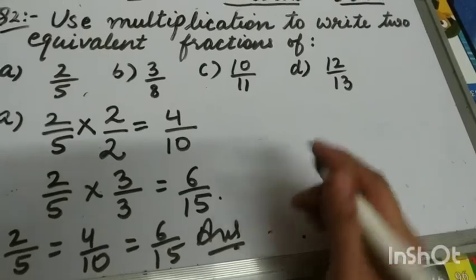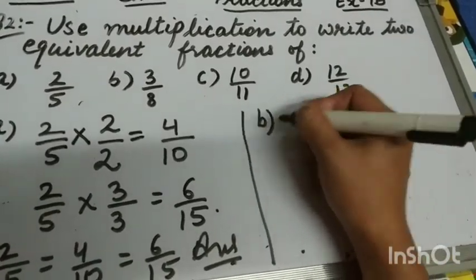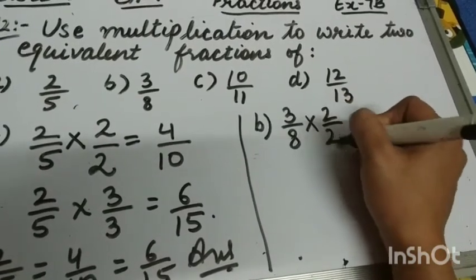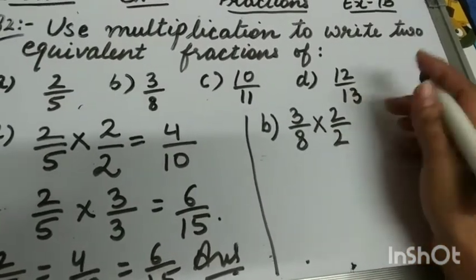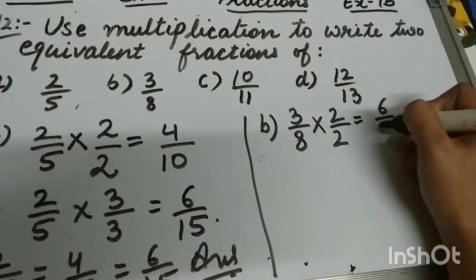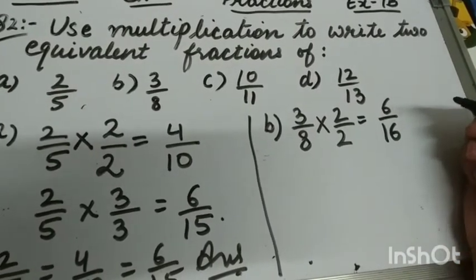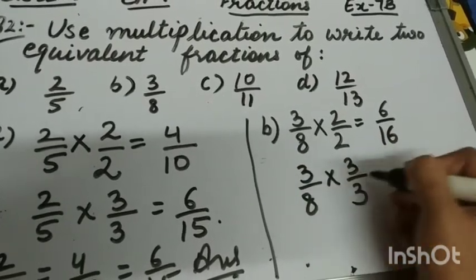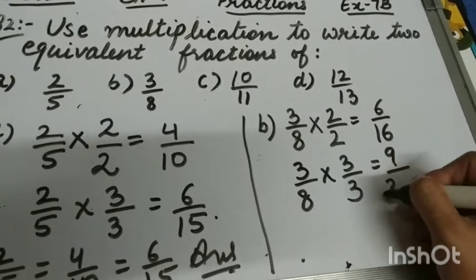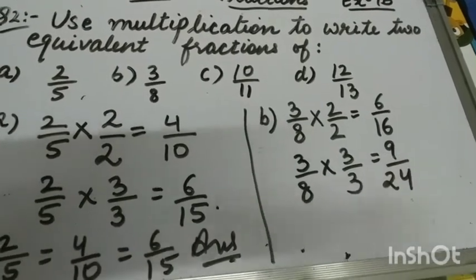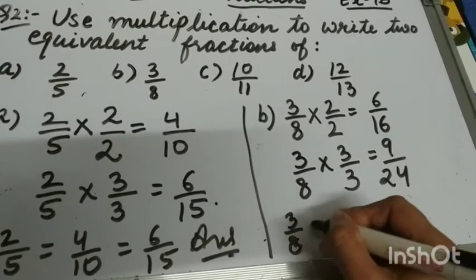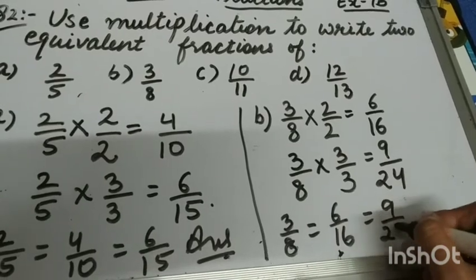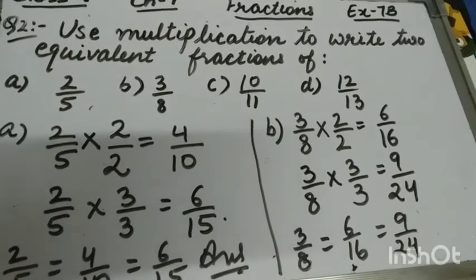Part B is 3 upon 8. In the first step, I am going to multiply the numerator and denominator by 2 — it will be 3 twos are 6 and 8 twos are 16. Next, I am going to multiply it by 3 — 3 threes are 9 and 8 threes are 24. So the equivalent fractions of 3 by 8 are 6 by 16 and 9 by 24.